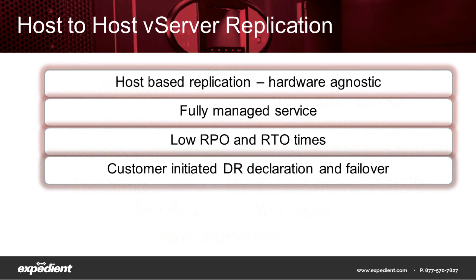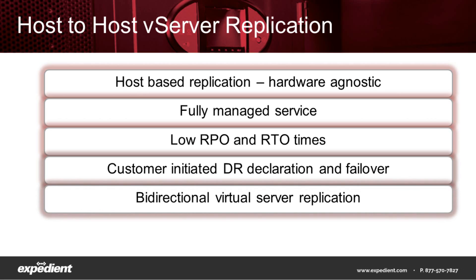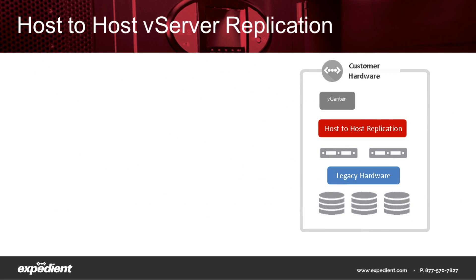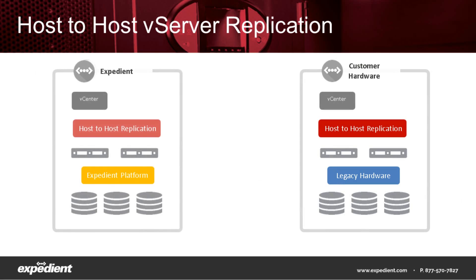Alternatively, our customers can declare a disaster and reach out to Expedient's 24x7 Operations Support Center if they wish to have our team perform the actual failover for them. Please keep in mind that when utilizing Expedient's host-to-host product, you don't necessarily need to clearly define production and DR sites. It's possible that one group of production applications can live in one site, another group in a second site, and then utilizing bi-directional replication, both groups of applications can participate in a disaster recovery plan under the same host-to-host deployment.